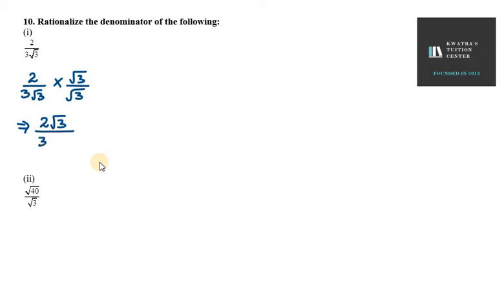In the denominator, you will get 3 under root 3 whole square. Squares and under root cancel. You will get 2 under root 3 over 3 into 3 is 9. So this is 2 over 9 under root 3. Let's move on to the next one.